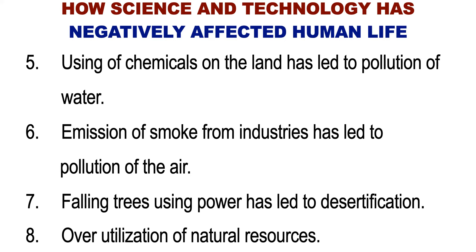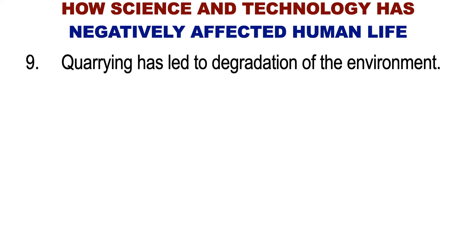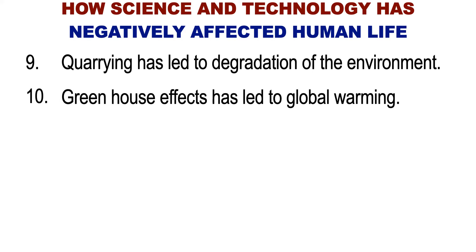Felling trees using power has led to desertification. Science and technology has led to over-utilization of natural resources, for example fishing. Quarrying and mining has led to the degradation of the environment. Science and technology has brought about the use of greenhouses.